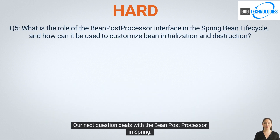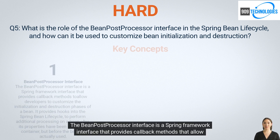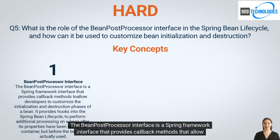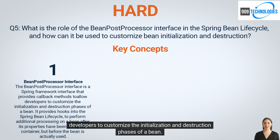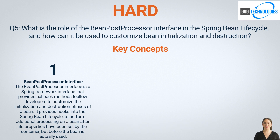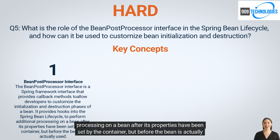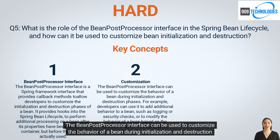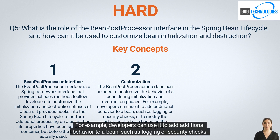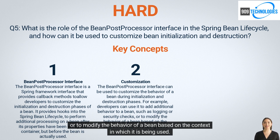Our next question deals with the bean post-processor in Spring. The BeanPostProcessor interface is a Spring framework interface that provides callback methods allowing developers to customize the initialization and destruction phases of a bean. It provides hooks into the Spring bean lifecycle, allowing developers to perform additional processing on a bean after its properties have been set by the container but before the bean is actually used. Developers can use it to add additional behavior such as logging or security checks, or to modify the behavior of a bean based on context.